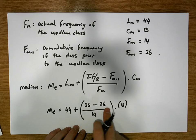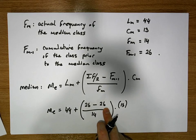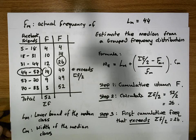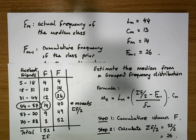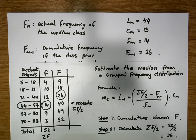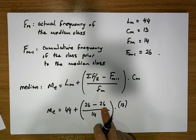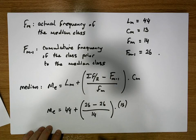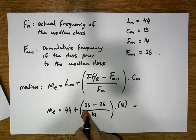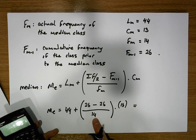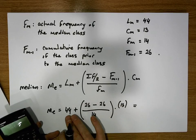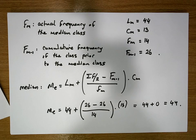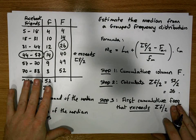What we can see is that this factor here is going to be zero. This is just an unusual case. The reason is that our sigma F over two, which is 26, actually is one of our cumulative frequencies. More than likely sigma F over two will be greater than capital F of M minus one. In this situation, 26 minus 26 is zero, zero divided by 14 is zero, zero times 13 is zero. So we simply end up with 44 plus zero, which equals 44. The median for this grouped frequency distribution is 44.